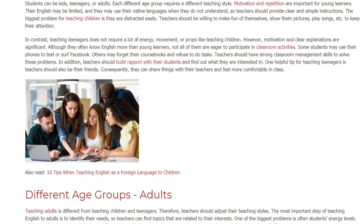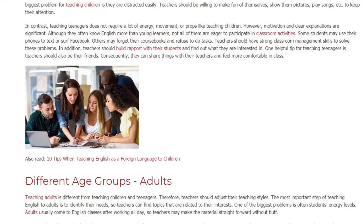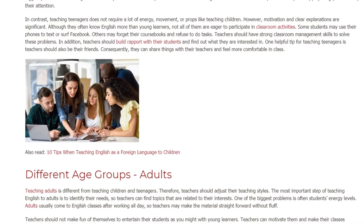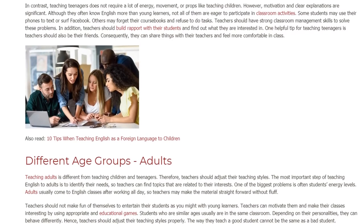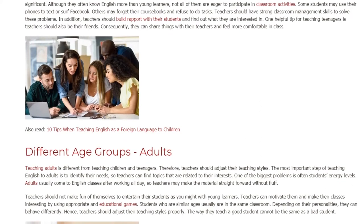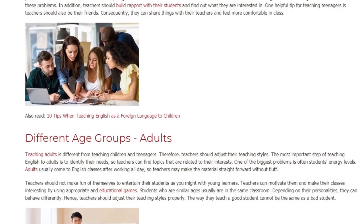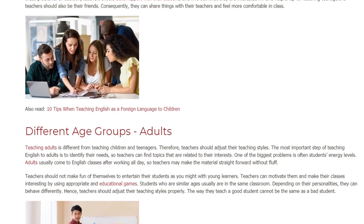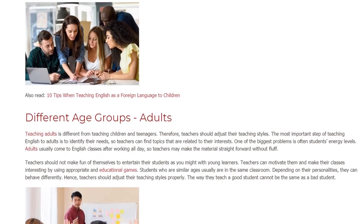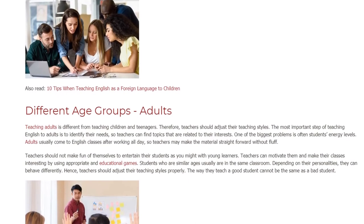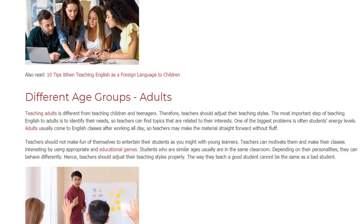Teaching adults is different from teaching children and teenagers. Therefore, teachers should adjust their teaching styles. The most important step of teaching English to adults is to identify their needs, so teachers can find topics that are related to their interests. One of the biggest problems is often students' energy levels. Adults usually come to English classes after working all day, so teachers may make the material straightforward without fluff. Teachers can motivate them and make their classes interesting by using appropriate and educational games.